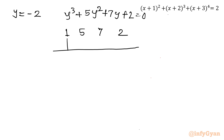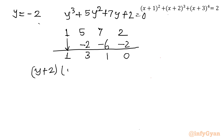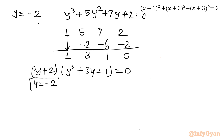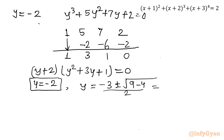Carry down the leading coefficient 1. Multiply: −2×1 = −2; 5+(−2) = 3. Then −2×3 = −6; 7+(−6) = 1. Then −2×1 = −2; 2+(−2) = 0. Remainder is 0, confirming the factorization: (y+2)(y² + 3y + 1) = 0. Applying the quadratic formula to y² + 3y + 1 = 0 gives y = (−3 ± √5) / 2.